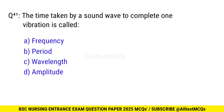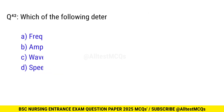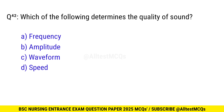Question No. 41: The time taken by a sound wave to complete one vibration is called? The correct option is B: Period. Question No. 42: Which of the following determines the quality of sound? The correct option is C: Wave form.